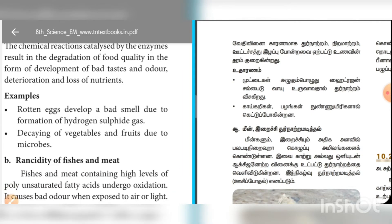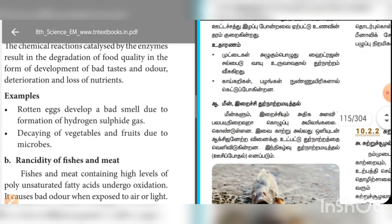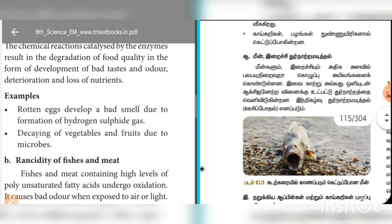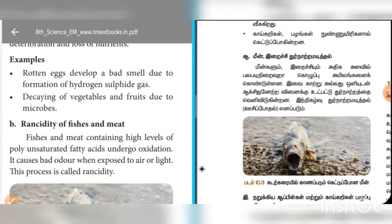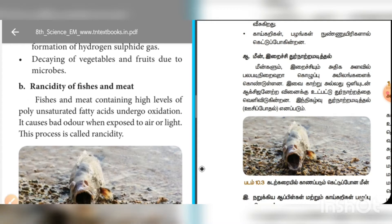Food spoilage produces a bad smell due to the formation of hydrogen sulfide gas. Decaying of vegetables and fruits occurs due to microbes. There is a bad smell due to the effect of hydrogen sulfide gas. Decomposition of fish and meat also produces a bad smell.